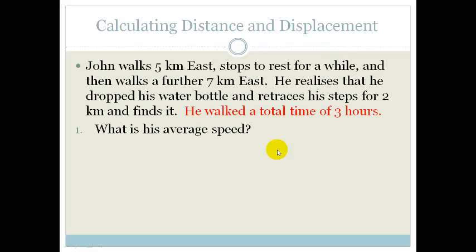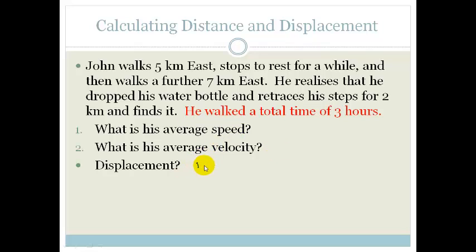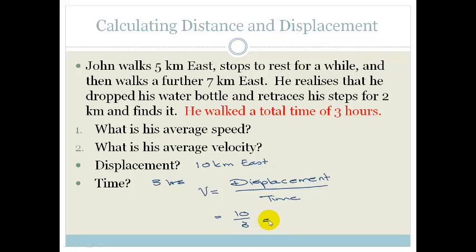Right. Now, let's look at his displacement. We want his average velocity. First of all, what was his displacement? His displacement was 10 kilometers east. The time is still 3 hours. So, displacement divided by time gives us our velocity, our average velocity.